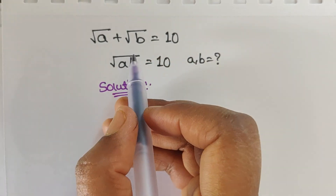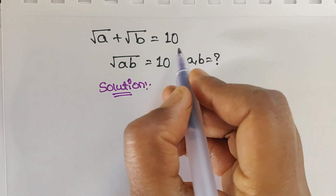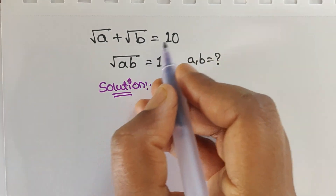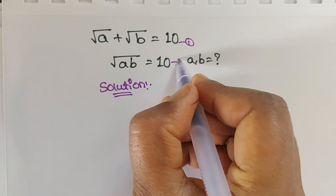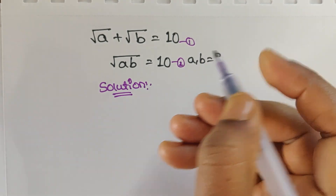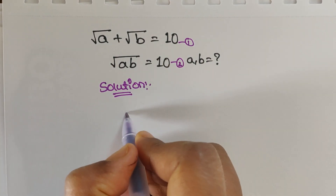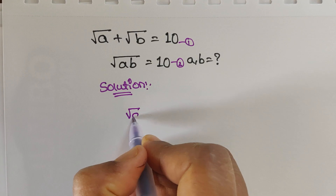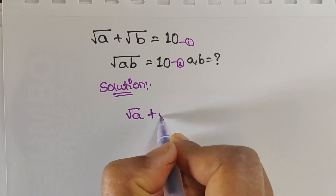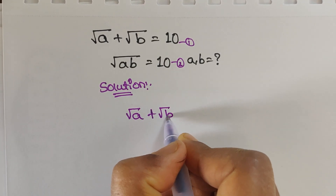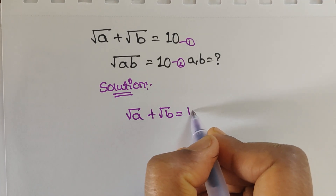We have been given two equations. Let us consider this equation 1 and this is equation 2. So first we will take the first equation, that is square root of a plus square root of b equals 10.